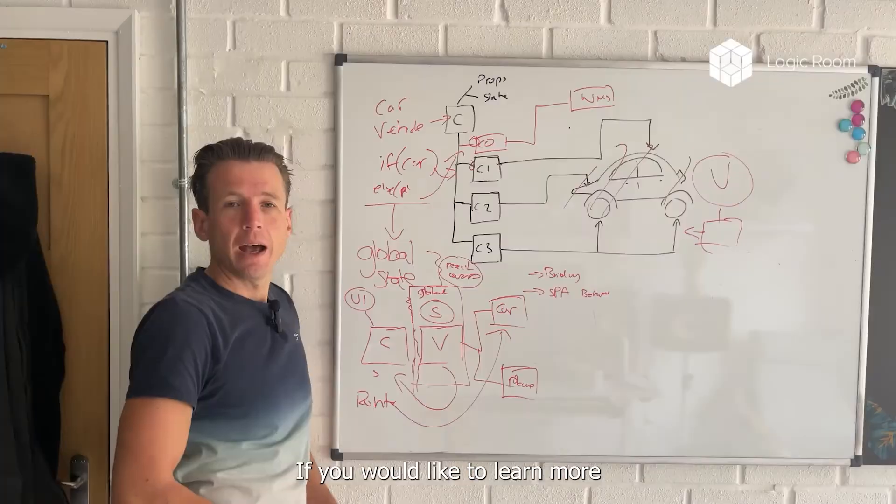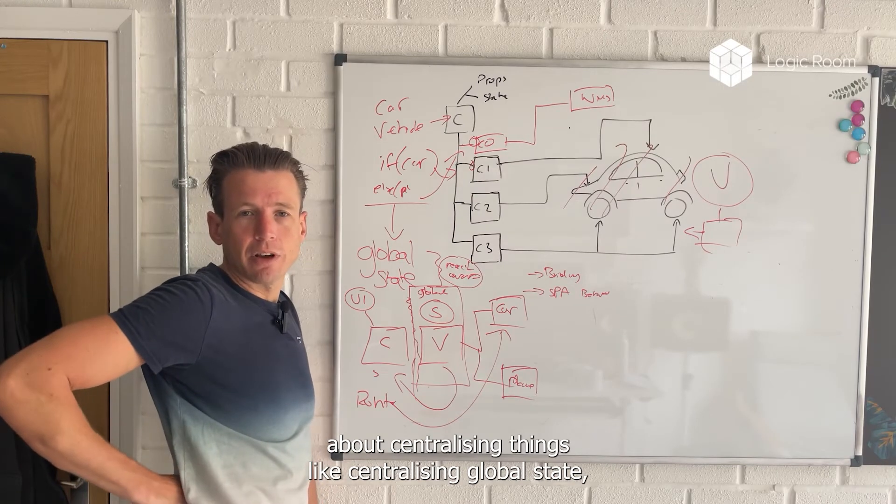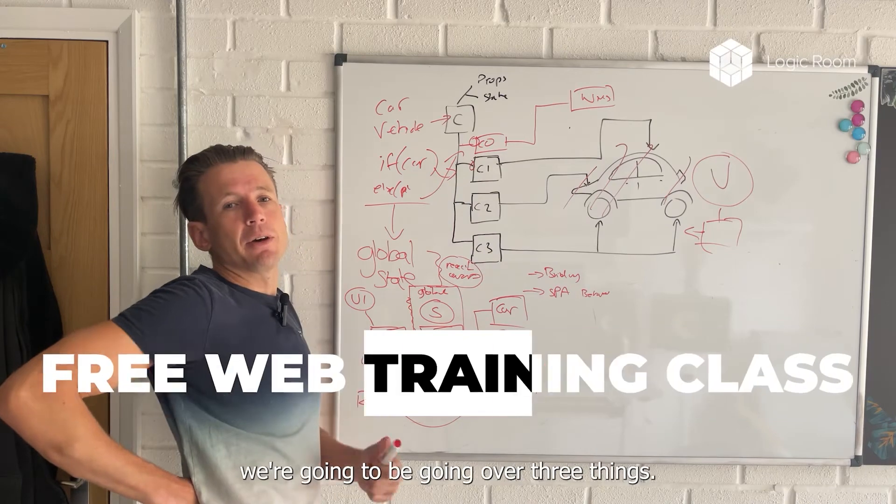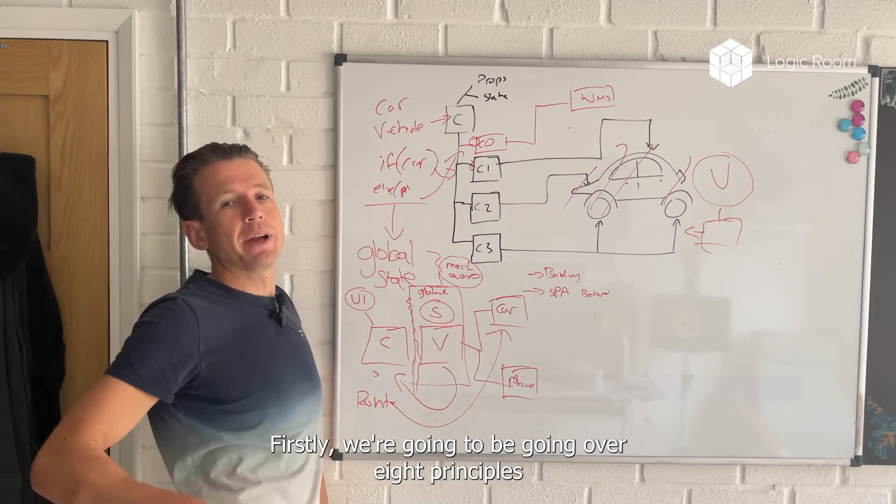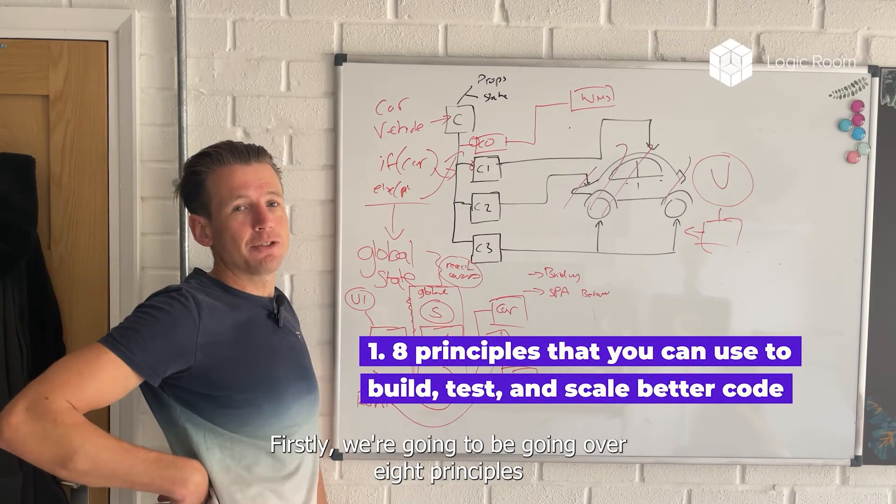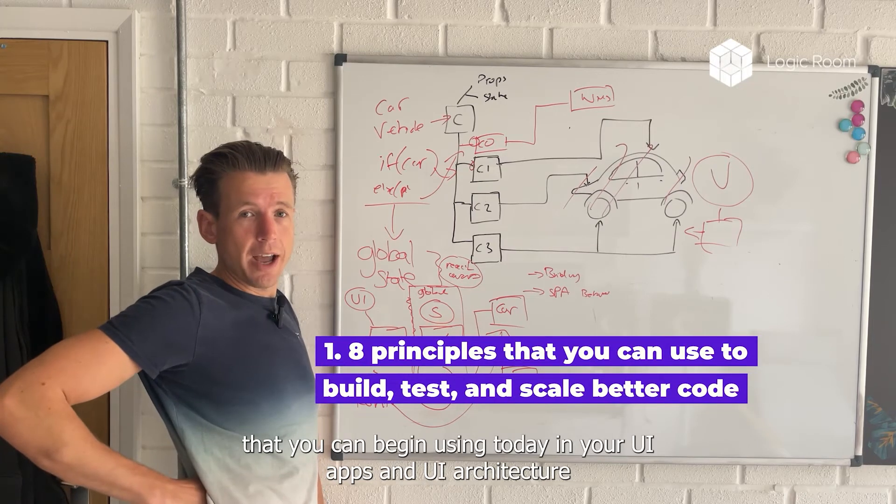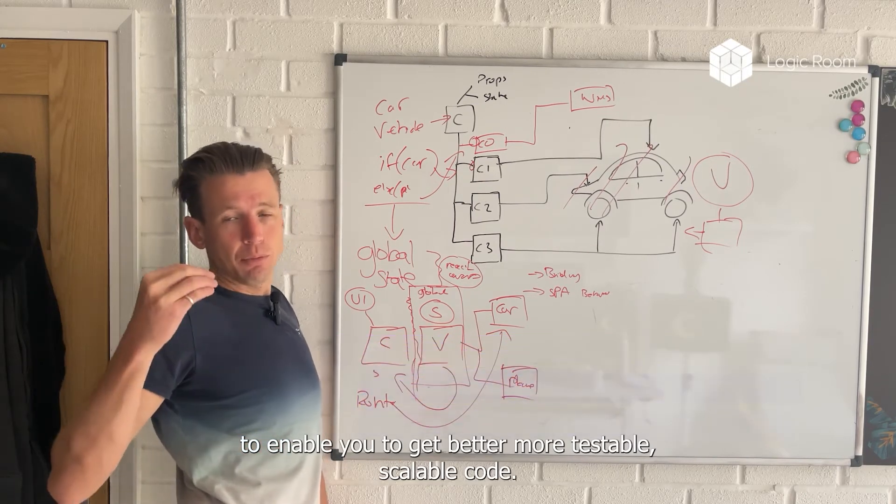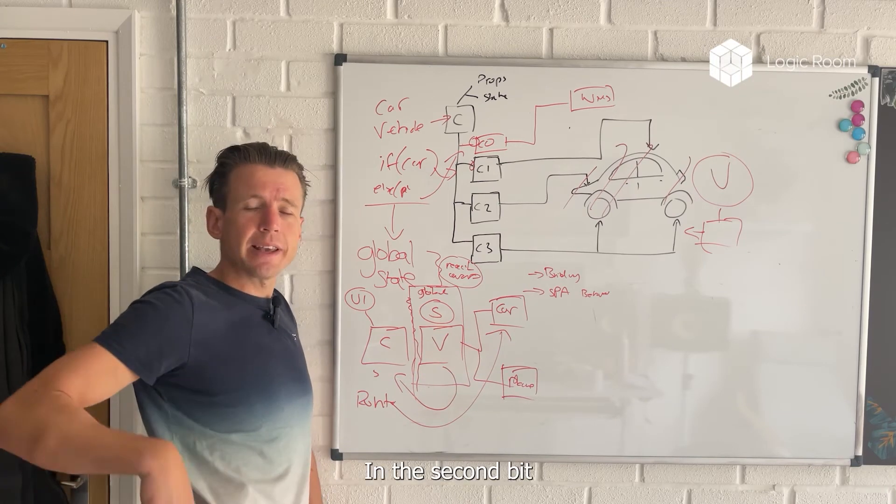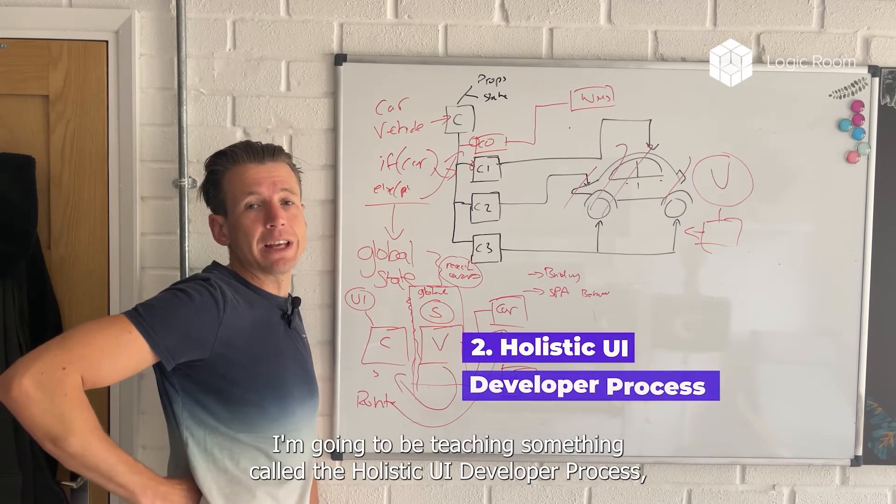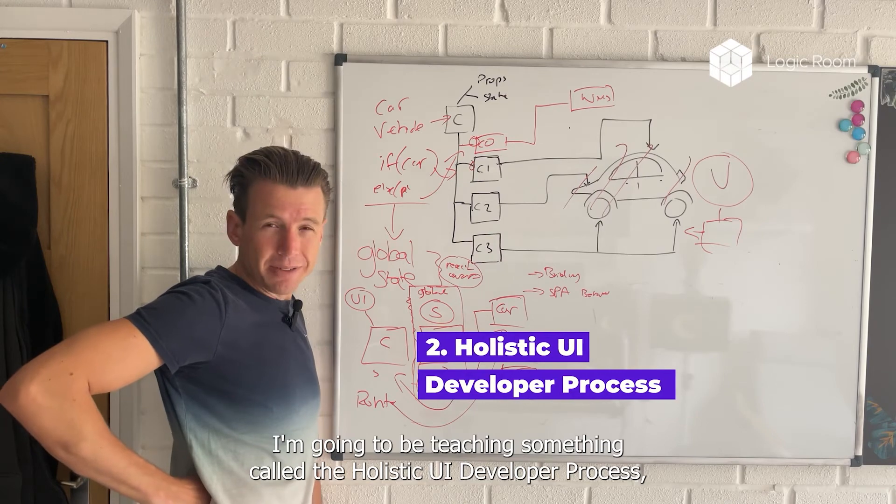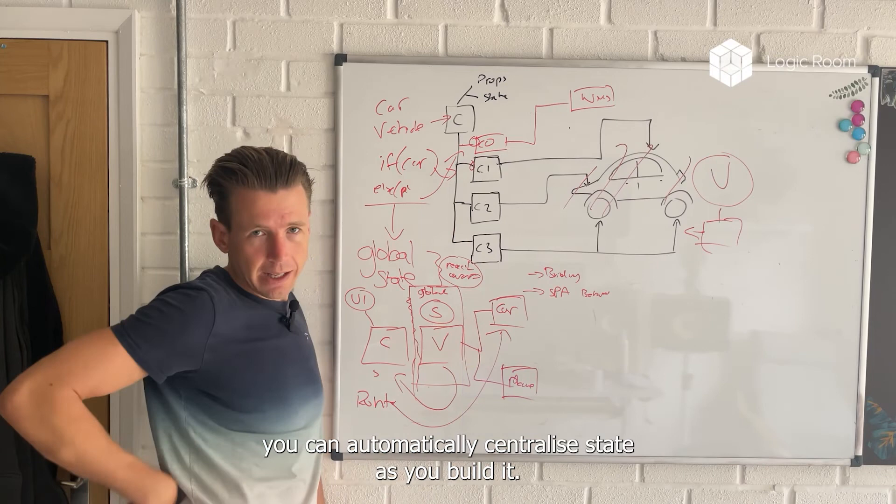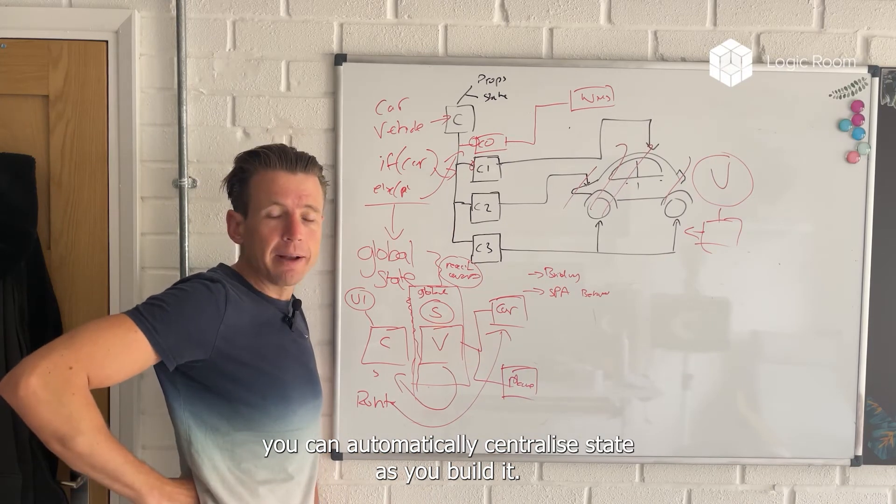That's the explanation of when we centralize global state. If you would like to learn more about centralizing global state, I'm running a free web training craft this week. In it, we're going to be going over three things. Firstly, we're going to be going over eight principles that you can begin using today in your UI apps and UI architecture to get better, more testable, scalable code. And the second bit, I'm going to be teaching you something called the holistic UI developer process, which is going to give you a guardrails approach to make sure that as you build your system, you're going to automatically centralize state as you build it.